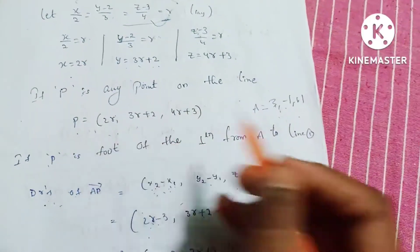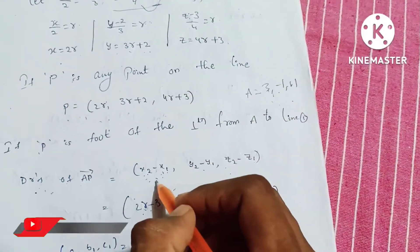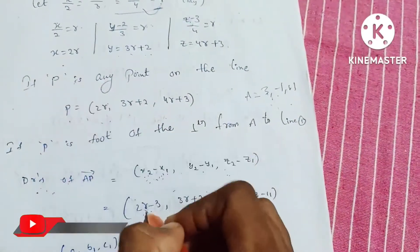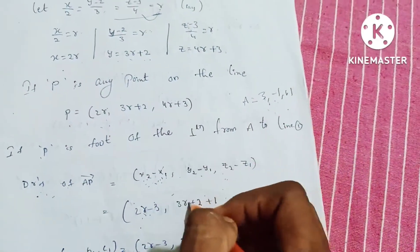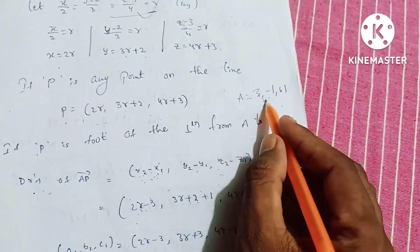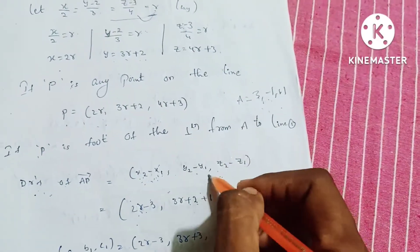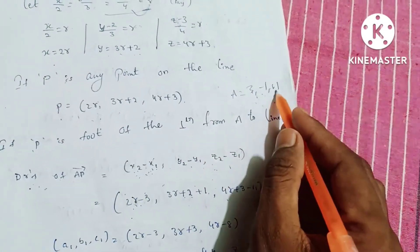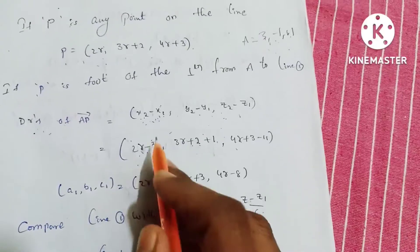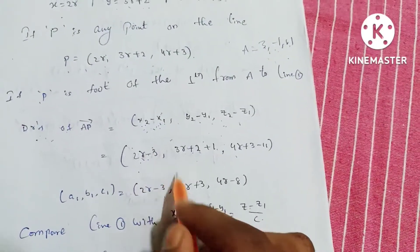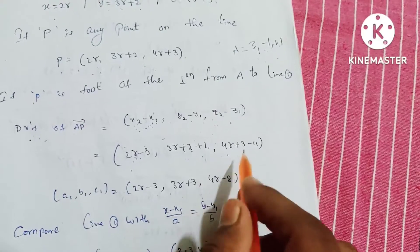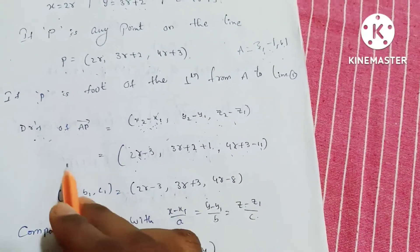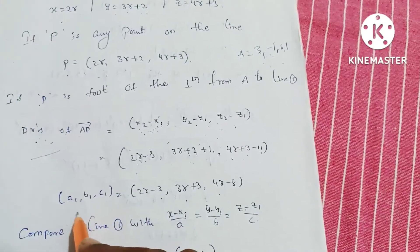So the direction ratios, the formula is x2-x1, y2-y1, z2-z1. x2 is 2r minus x1 is 3, y2 is 3r+2 minus y1 is -1, so minus 1 becomes plus 1, z2 is 4r+3 minus z1 is 11. So 2r-3, 3r+3, 4r-8.